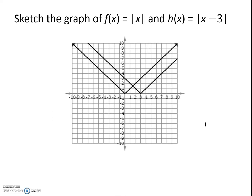Now, sketch the graph of the absolute value of x, and h(x) equals the absolute value of x minus 3. When we have something like this, where it is in the grouping symbol, it is a horizontal move.